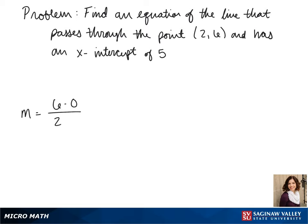So we do 6 minus 0 over 2 minus 5. We get 6 divided by negative 3. That means we have a slope of negative 2.